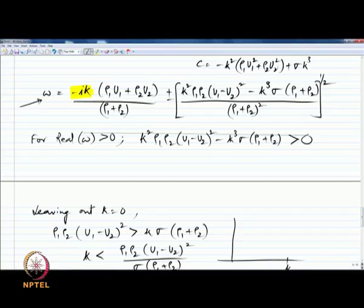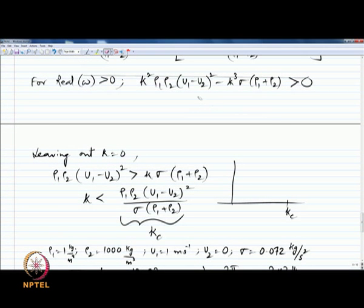Omega is minus i k times rho 1 u 1 plus rho 2 u 2 divided by rho 1 plus rho 2, plus or minus a term under a radical. Now we went through and discussed the issues associated with k cutoff, that is the value for a wave number above which all omegas—both the omegas—have real parts that are negative. That is what we signaled with this k cutoff.